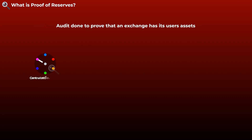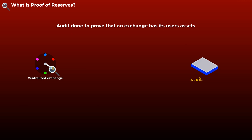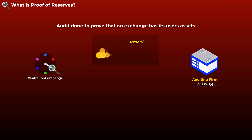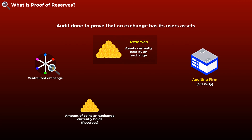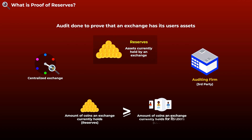So, what is proof of reserves? Simply, proof of reserves is a type of assessment or audit done to prove that an exchange actually has its users' deposits or assets. The audit is usually done by an independent third party, which is an auditing firm in most cases. Reserves mean the assets held or controlled by an exchange or a platform, and for us to make sure that an exchange actually has its users' assets, we have to verify that the amount of coins the exchange currently holds — known as the reserves — is larger than or equal to the amount of coins the exchange holds for its users, which is known as the liabilities.